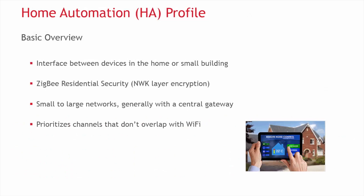The Home Automation profile is designed to interface with devices in a home or small building. It uses network-level security, which is a basic level of security designed to only allow devices in the same network to decrypt each other's messages by ensuring they all have a unique network-wide key. The Home Automation profile is intended for use in small or large networks, but is generally used in smaller home networks.